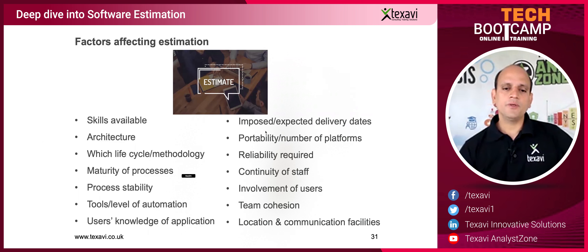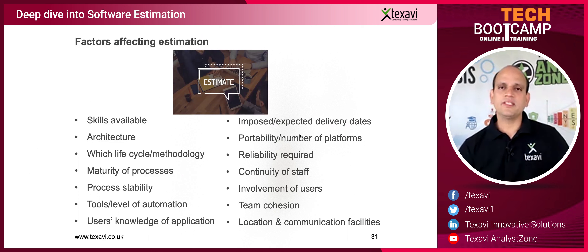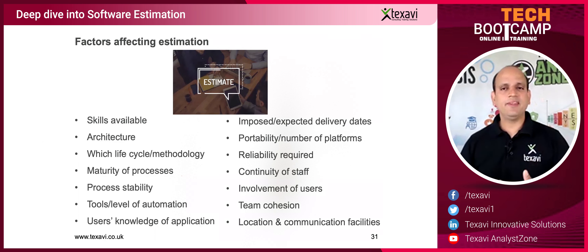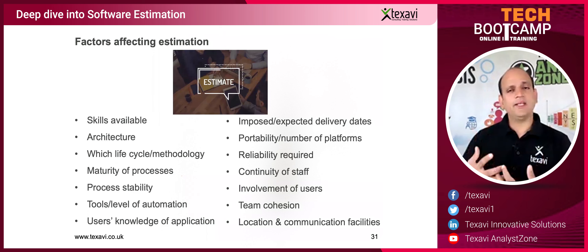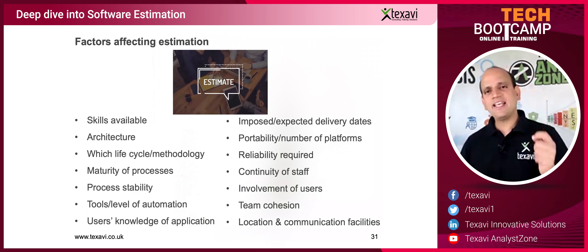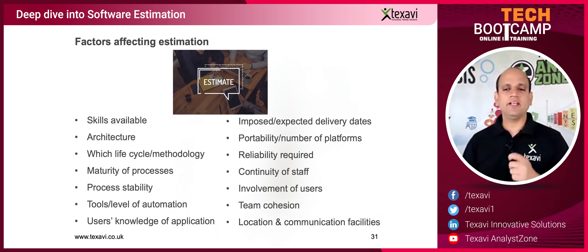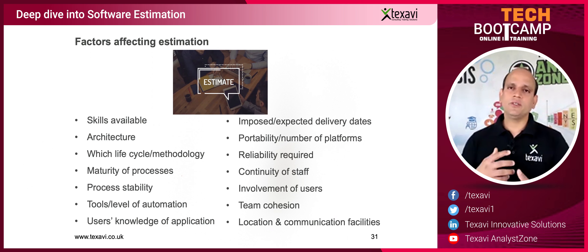And then the imposed or expected delivery is again something very important — from the business point of view: I want this done by April, I want it done by September 2021. These are the kinds of things that would actually drive the technology. Whatever we're delivering is benefiting the business — it is delivering business value, it's not for technology. So you need to work backwards and make sure that you're delivering.